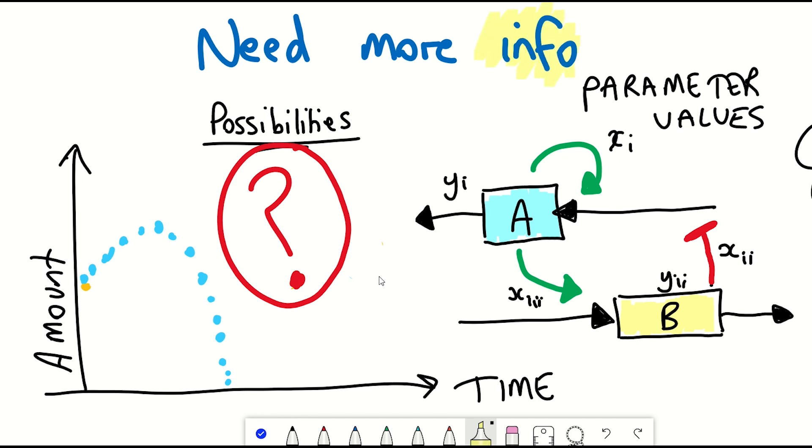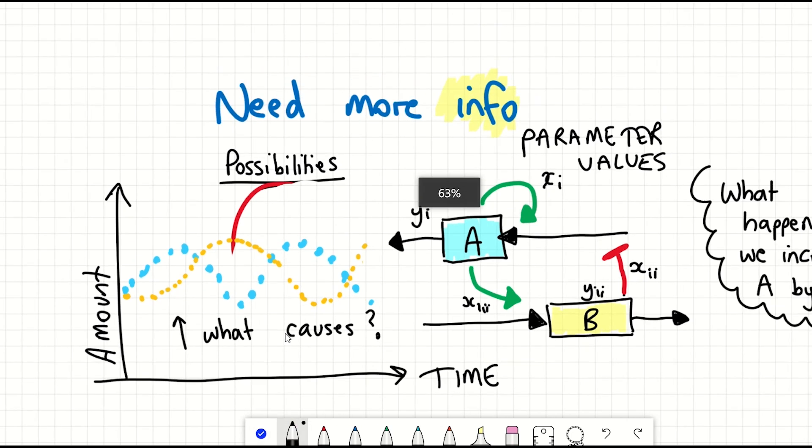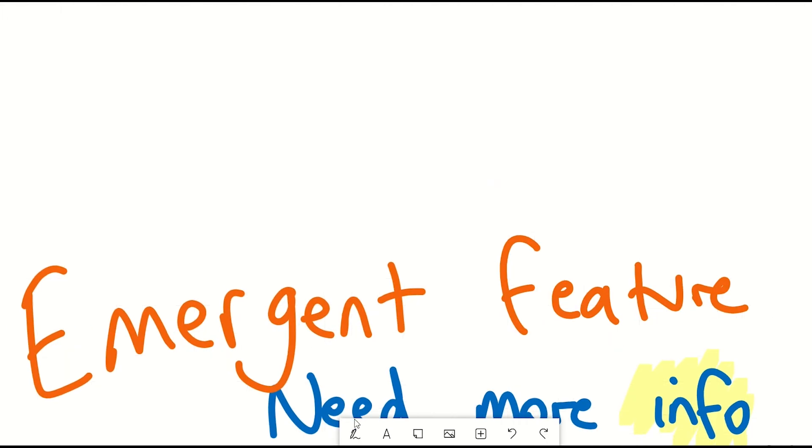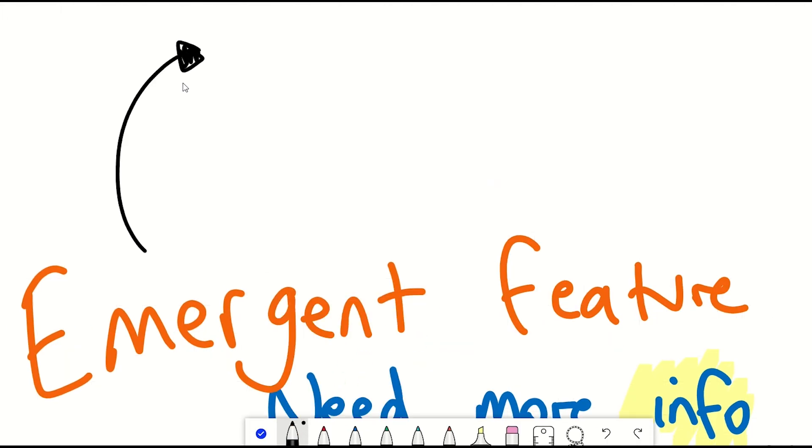But let's say it did oscillate. What is then causing the oscillation if neither component can oscillate without the other? Well, this is said to be an emergent feature.